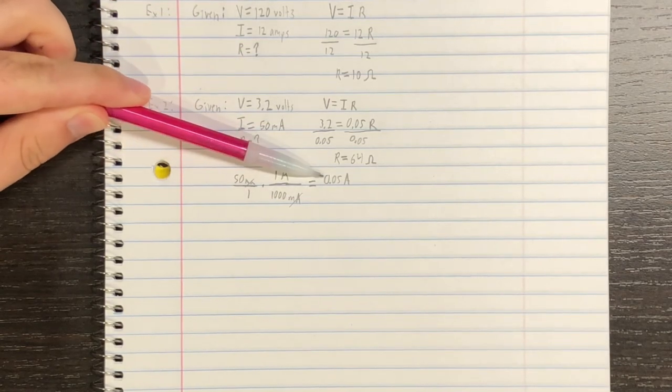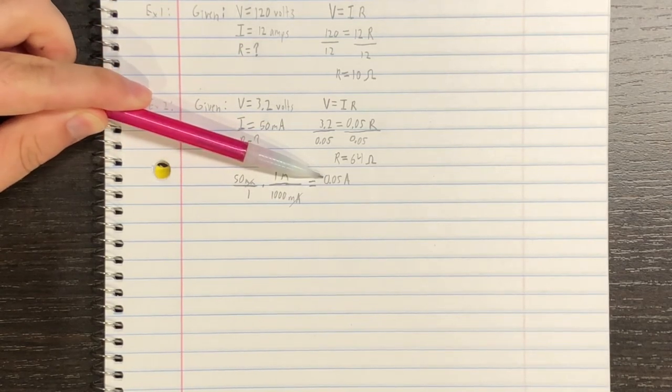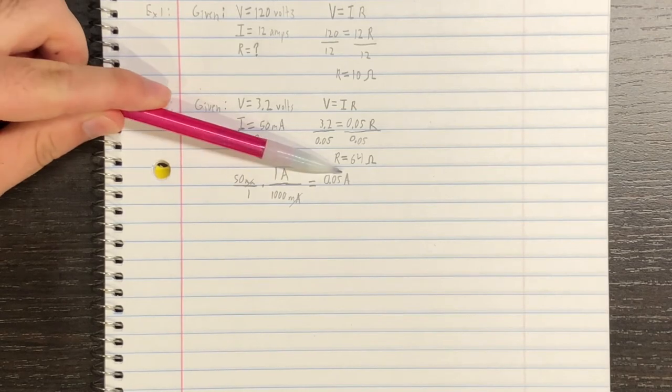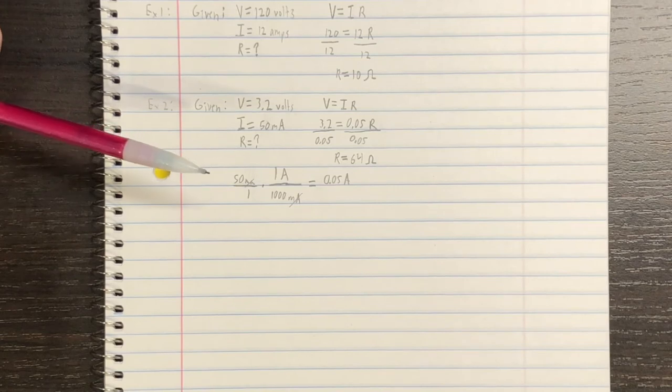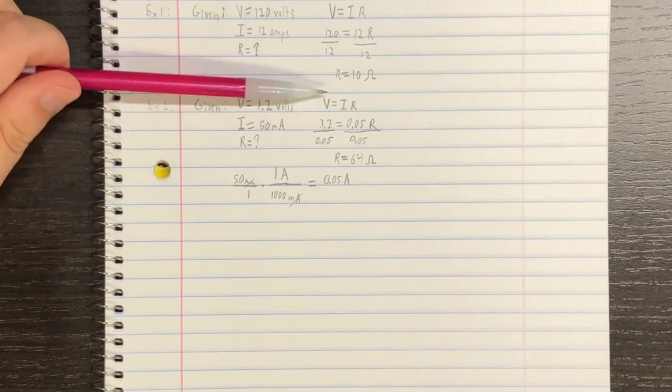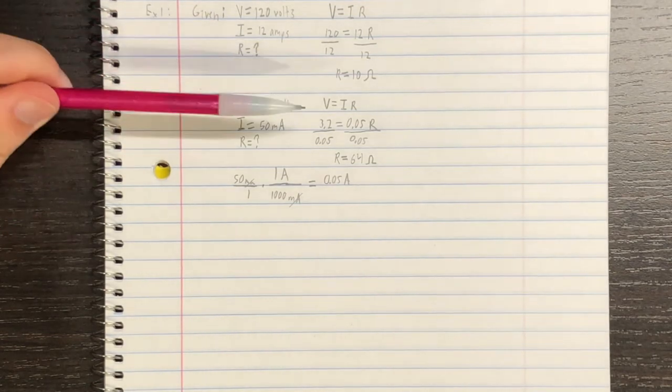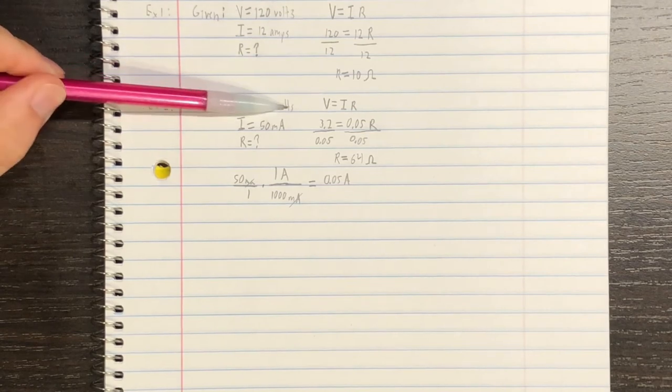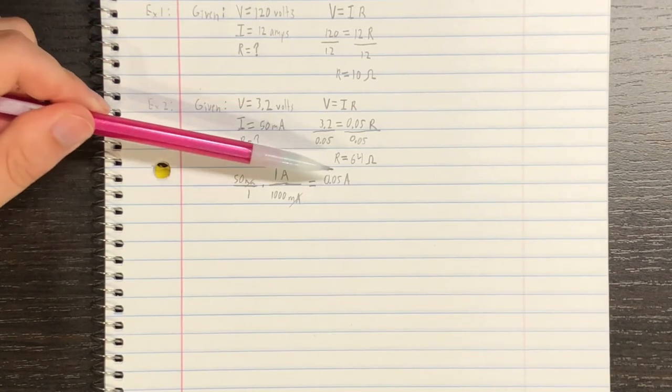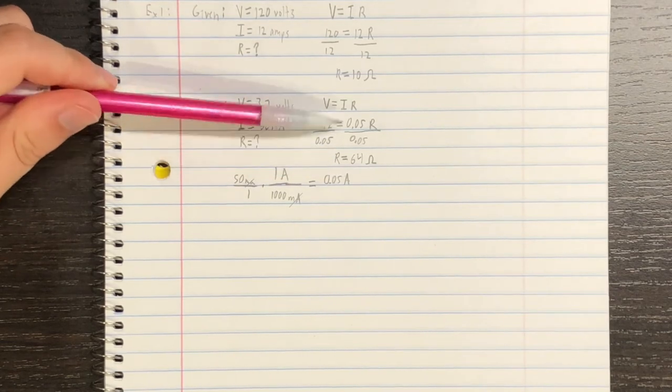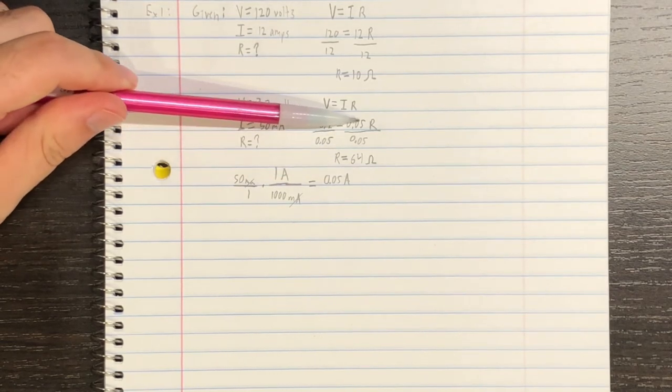And then, after doing some simplifying, we end up with 0.05 amps. So, now, we can input this known information into Ohm's Law. So, for voltage, we have 3.2 volts. And for amperage, we know that we have 0.05 amps. So, we put in 0.05.